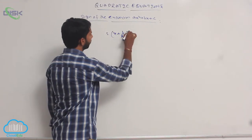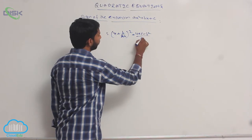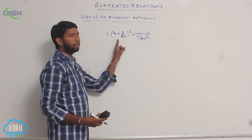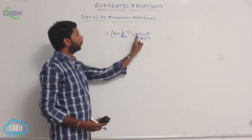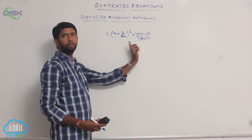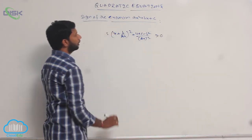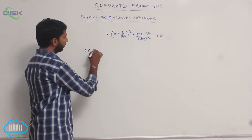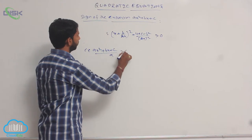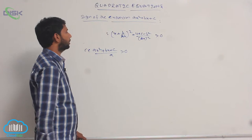This is equal to (x + b/2a)² + (4ac - b²)/(2a)². Here, (x + b/2a)² is always greater than 0, and (4ac - b²) is always greater than 0, and (2a)² is always greater than 0. Totally the value is greater than 0. That is, ax² + bx + c divided by a is greater than 0.